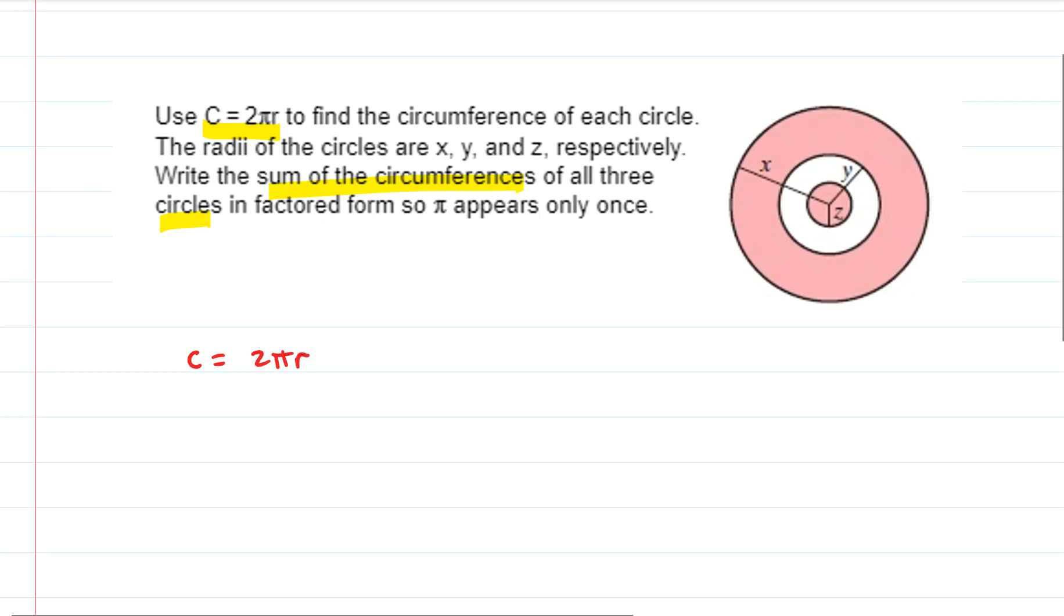So our first one would be 2π—instead of r we have z for the inside circle. Then we have 2πy for the middle circle, the white one, and we have 2πx for the outer circle, the largest one, the largest pink one.